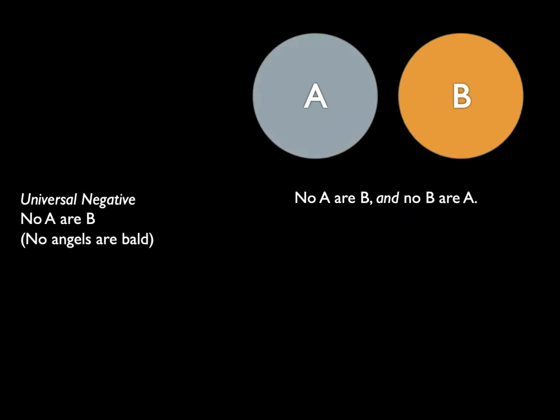Next we have the universal negative, which most people find to be the easiest of the four moods. The universal negative includes the word "no," which is why it is negative, and "universal" refers to the fact that it applies to all in the category. So, "no angels are bald" — because no angels are bald, there is no portion of either circle that overlaps. There are angels who are not bald, and there are bald things who are not angels.